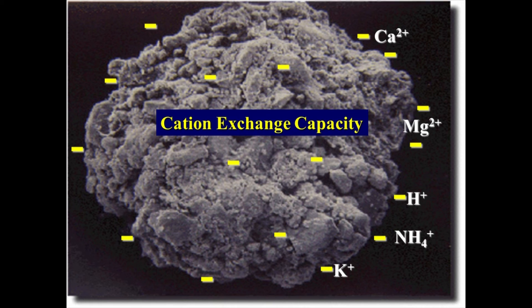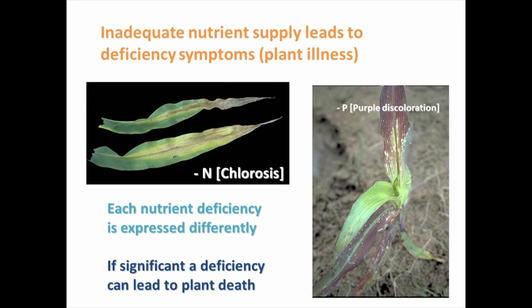Cation exchange capacity (CEC) is the term soil scientists use to describe the amount of negative charges in a soil. Visualize a soil particle with multiple negative-charge sites, each associated with a positively charged nutrient ion. Without an adequate nutrient supply, you get deficiency symptoms — essentially an illness of the plant. For example, nitrogen deficiency in corn causes leaves to turn yellow and eventually black. Phosphorus deficiency is unique — it produces a purple coloration and stunted plant growth.